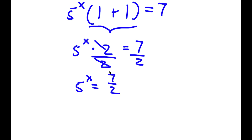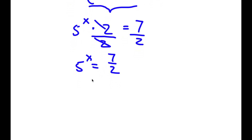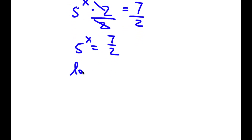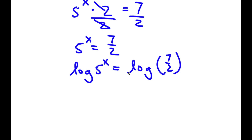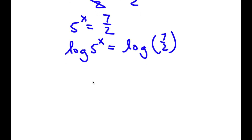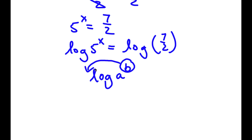Now I'm going to take the log on both sides. So I have log 5 to the power of x is equal to log 7 over 2. An important property of logarithms is that if I have something in the form log a to the power of b, I can move this exponent b to the front of the logarithm. So this would be equal to b times log a.